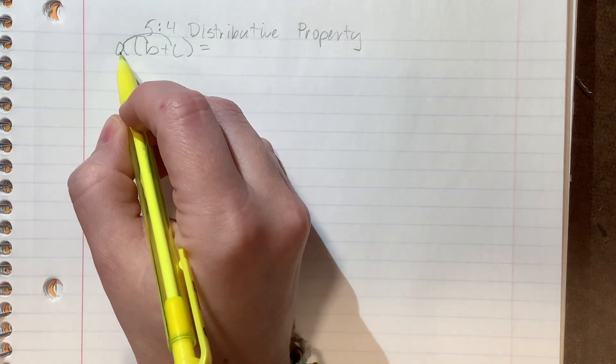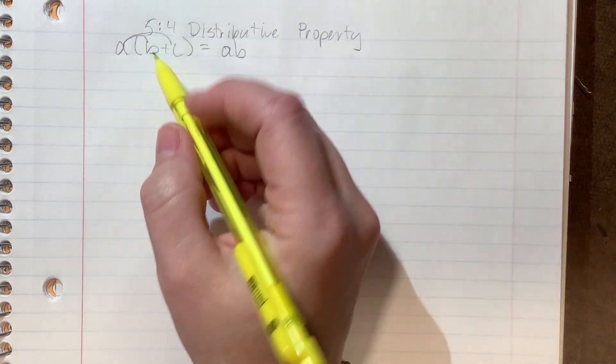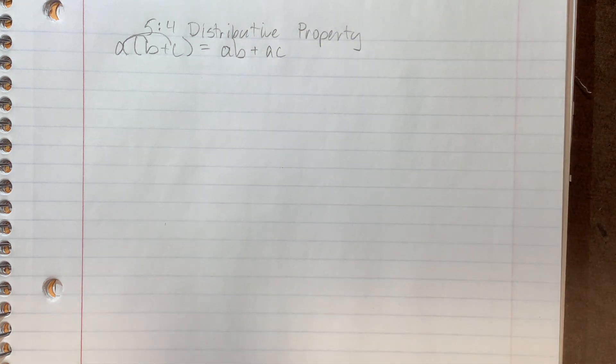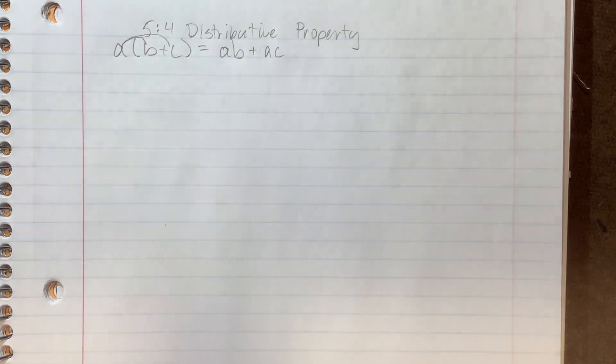And to do that, we're going to multiply everybody inside by the guy on the outside. And I even like drawing the line. So you do A times B, which variable-wise is just AB, and A times C is AC. So you'd multiply everybody that's on the inside by the guy on the outside, and done.